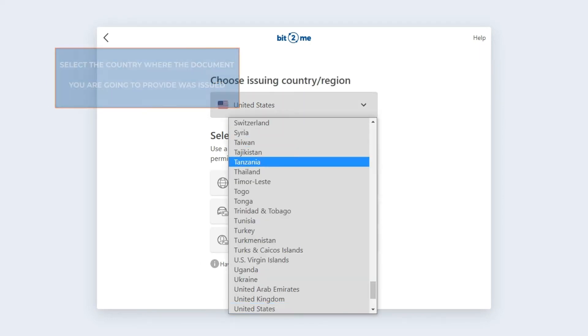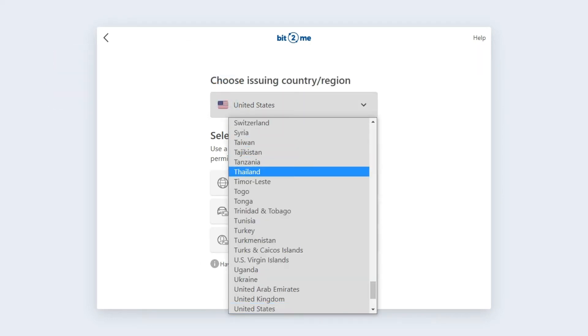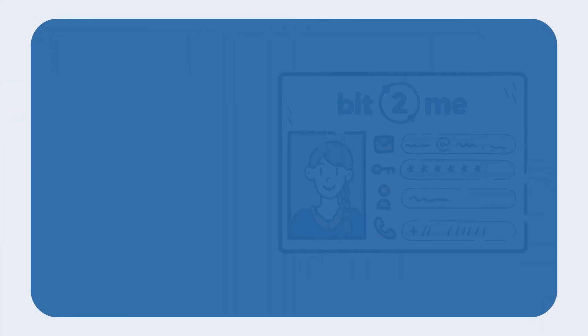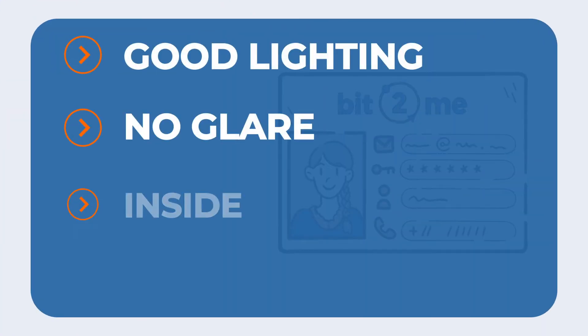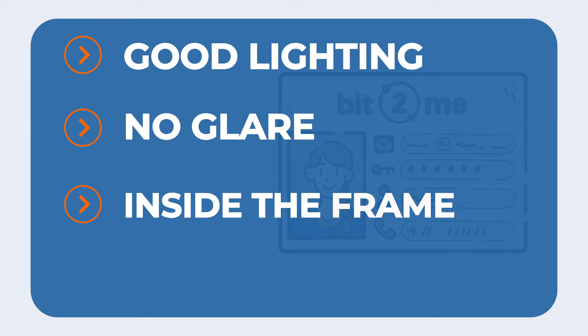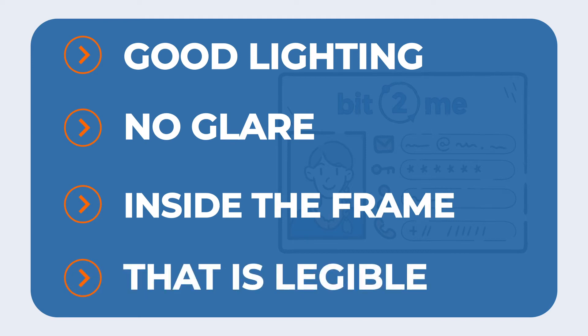Select the country where the document you are going to provide was issued. It is important that the photo has good lighting, without glare, that it fits in the frame, and that it is legible. Once you have selected the document type, you can verify it in three different ways.